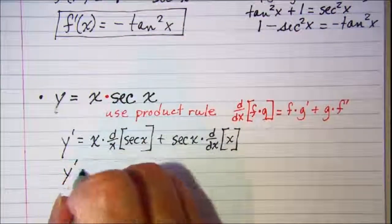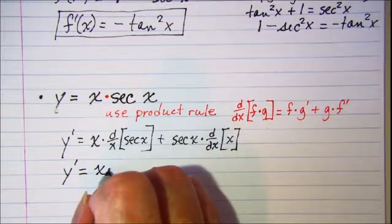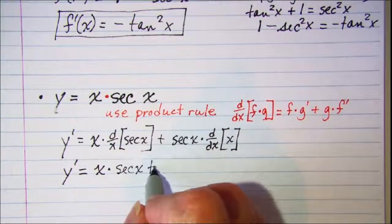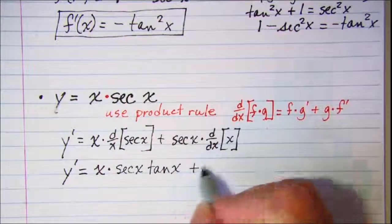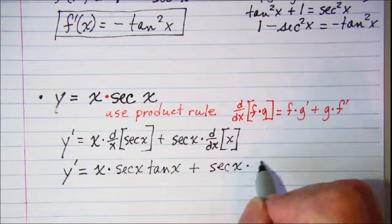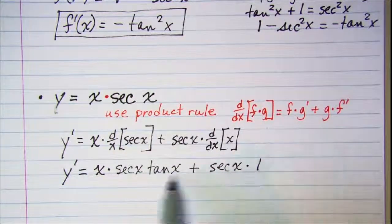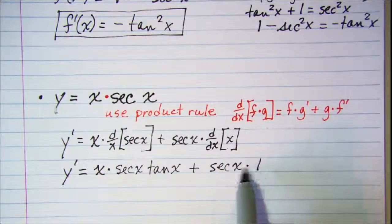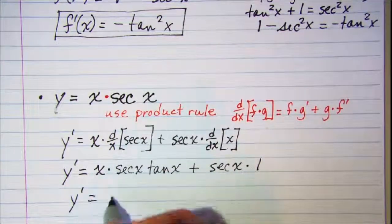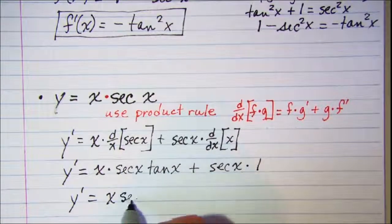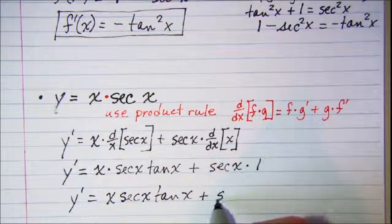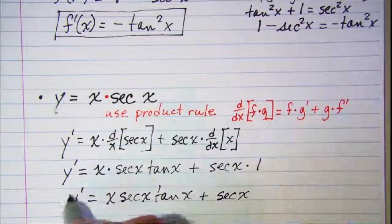So y prime equals x times secant x tangent x plus secant x times one. The only simplifying we do is multiply one times secant x, giving us the final derivative: x secant x tangent x plus secant x.